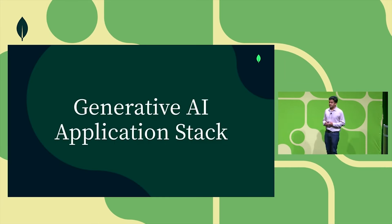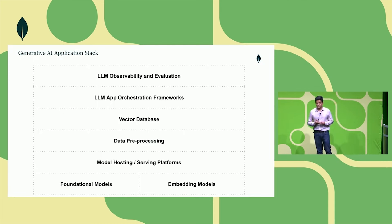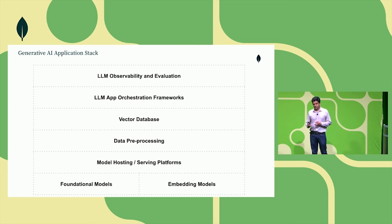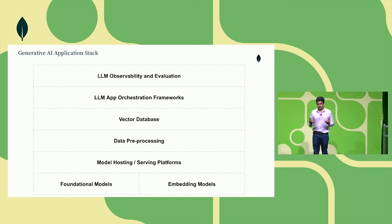Introducing the MongoDB generative AI stack. This stack broadly constitutes six categories. Starting from the very bottom, we have AI models — primarily your foundational models, generative models, and embedding models. Up the stack is your model hosting or serving platforms, followed by the data integration and data preprocessing layer, then the vector database which powers the memory for all these applications. To put these together, you get your LLM app orchestration frameworks.